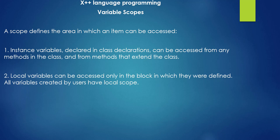The second type is a local variable. A local variable can be accessed only in the block in which it is defined. When we declare a variable in a local method or block, that variable is only accessible from that particular method or block. Variables created by users always have local scope.